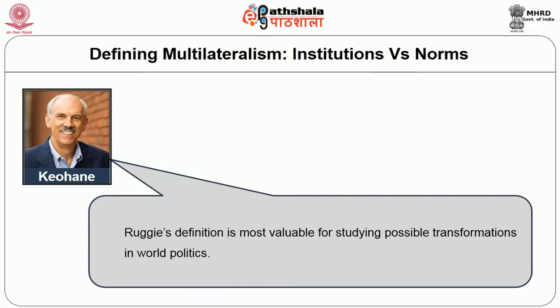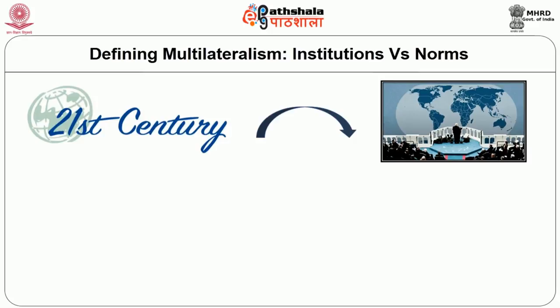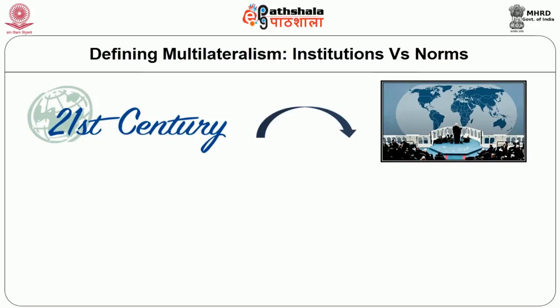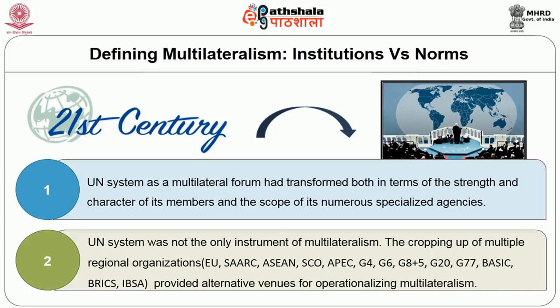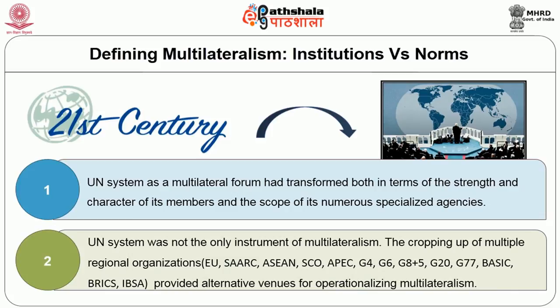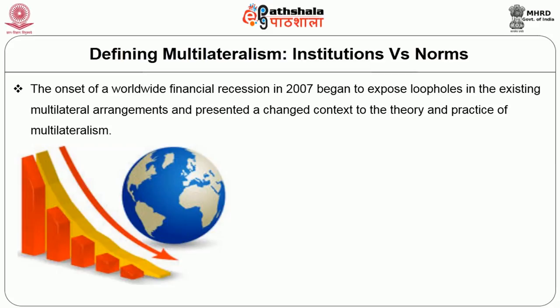Keohane and Nye's view is that Ruggie's definition is most valuable for studying possible transformation in world politics. At the beginning of the 21st century, another phase of transformation in world politics became visible. Firstly, the UN system as a multilateral forum had transformed both in terms of the strength and character of its members and the scope of its numerous specialized agencies. Secondly, the UN system was not the only instrument of multilateralism — the cropping up of multiple regional organizations such as the EU, SAARC, ASEAN, SCO, APEC, and the G20 provided alternative venues for operationalizing multilateralism. Additionally, the onset of a worldwide financial recession in 2007 began to expose loopholes in existing multilateral arrangements, presenting a changed context to the theory and practice of multilateralism.